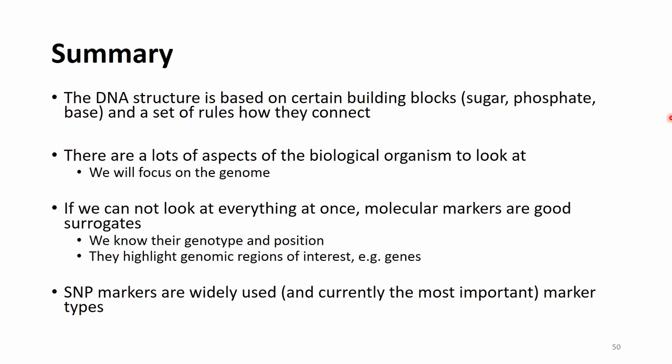For molecular markers it is very important that we know their genotype and their position on the genome. They highlight genomic regions of interest, for example genes, as was demonstrated in the 'where is the party at' example. There are multiple types of markers, but we will be focusing on single nucleotide polymorphism or SNP markers, which are widely used and currently the most important marker types.